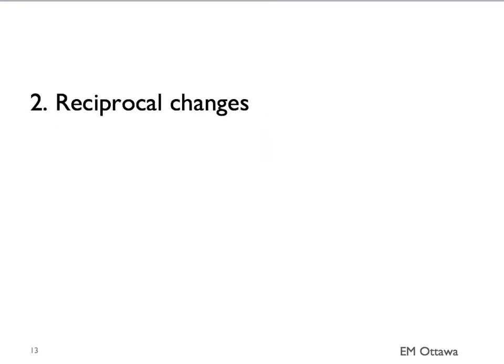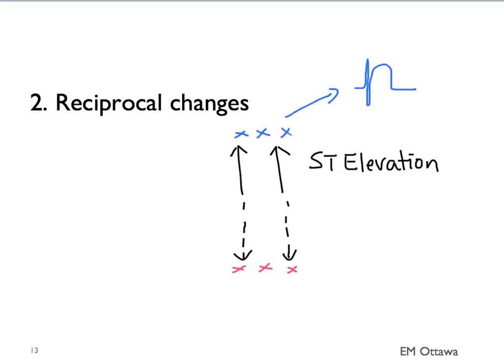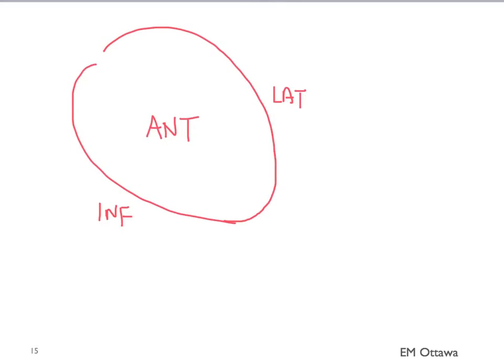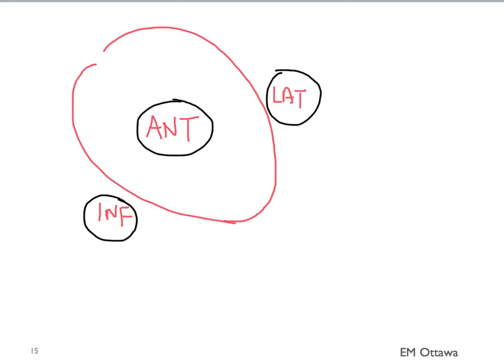The second part of an ST elevation MI has to do with reciprocal changes. It refers to the fact that if you have ST elevation going on in one territory of the heart, the ECG leads corresponding to the opposite territory should show ST depression — almost like a mirror image of the ST elevation. This is a schematic of a heart. You can see that the lateral wall of the heart is directly opposite to the inferior wall of the heart, and the anterior wall of the heart is opposite to the posterior wall of the heart.